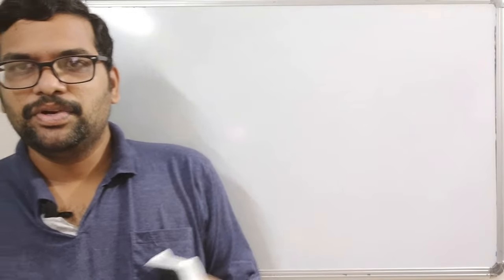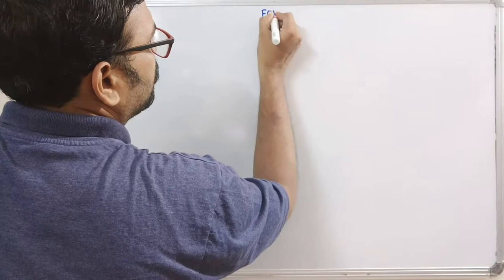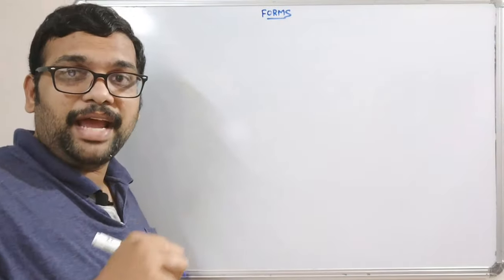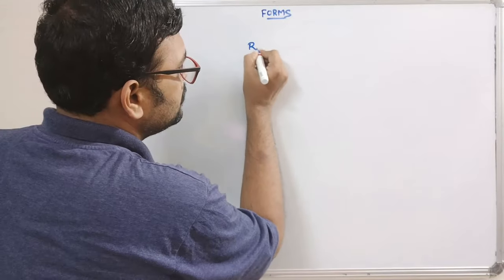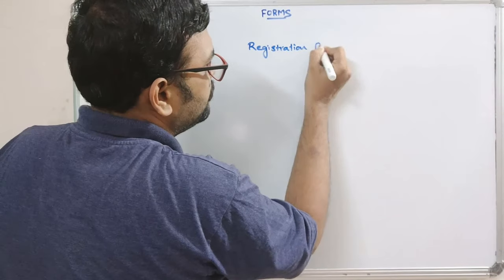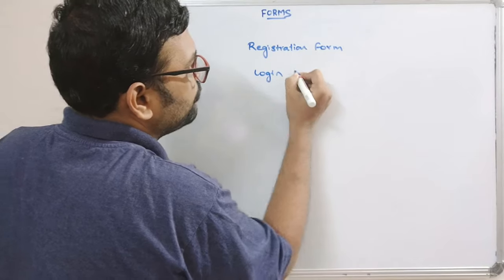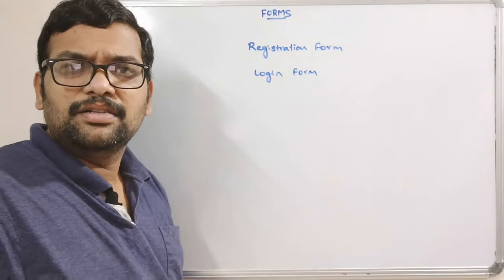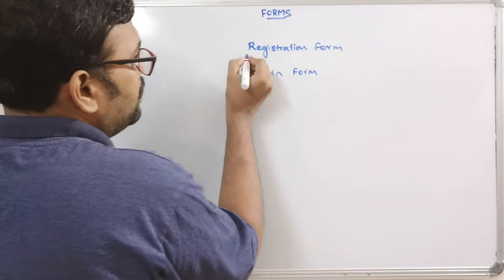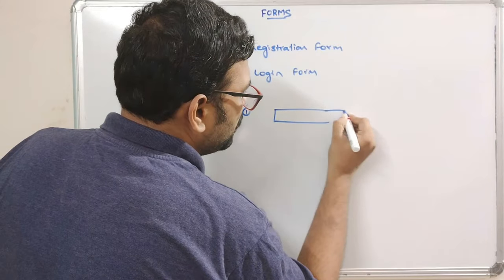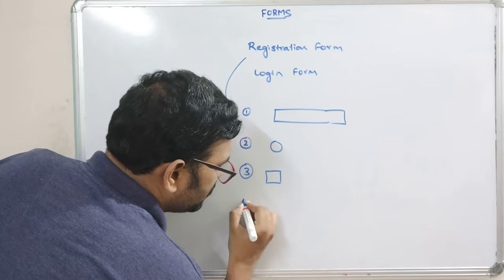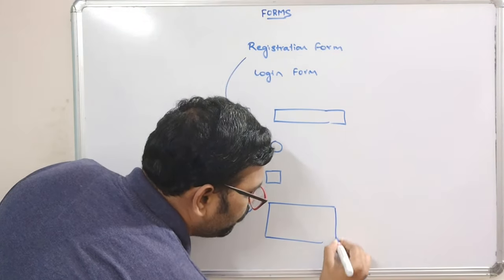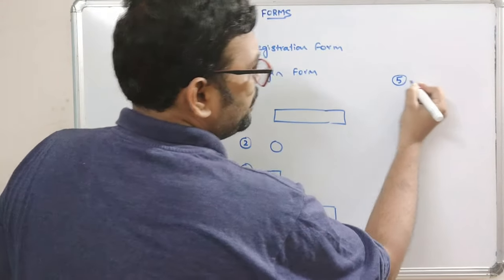Hello friends, welcome back to our session. In today's session we will discuss about a few elements of forms. In our regular life we see registration forms and login forms. While filling up any type of application we fill these registration forms. In an online application we generally observe symbols like circles, square boxes, large rectangles, and drop downs.